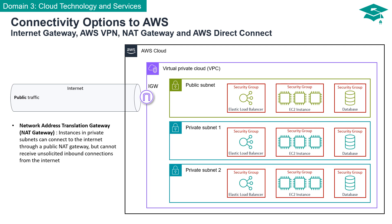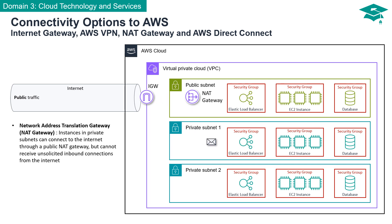A NAT Gateway is a crucial networking component enabling instances within private subnets to access the Internet. Acting as an intermediary, it facilitates outbound connections — instances in private subnets use the NAT Gateway to reach external resources, retrieve updates, download packages, or communicate with external services without exposing their private IP addresses. Importantly, instances connected through NAT Gateway cannot receive unsolicited inbound connections, adding a layer of security by preventing direct internet access to those instances.